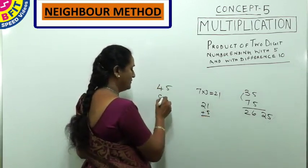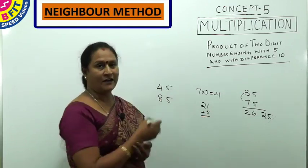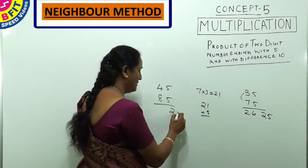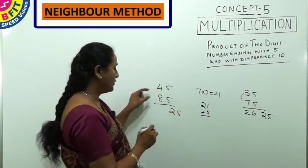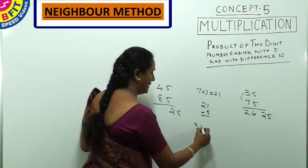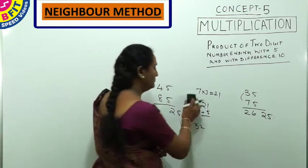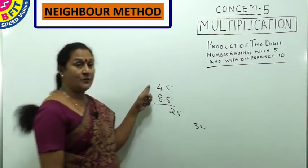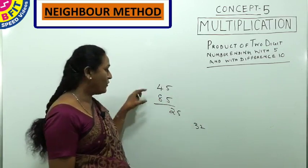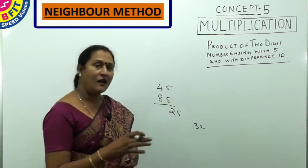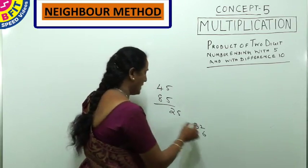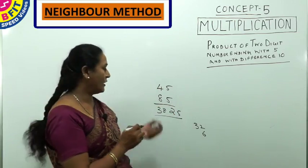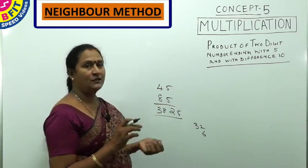For 45 and 85: both even numbers, so last two digits are 25. Product of 8 and 4 is 32. Sum of 8 and 4 is 12, half of 12 is 6. Add 6 to 32 = 38. So the product of 45 and 85 is 3825.